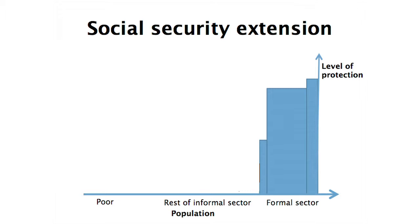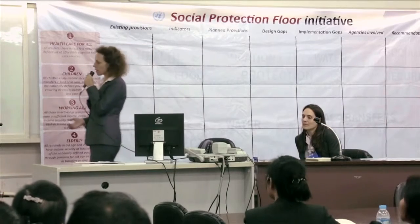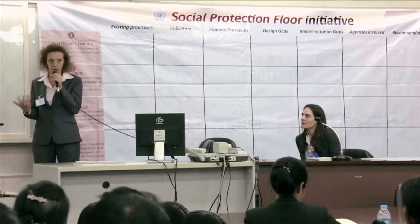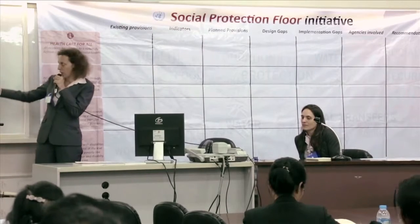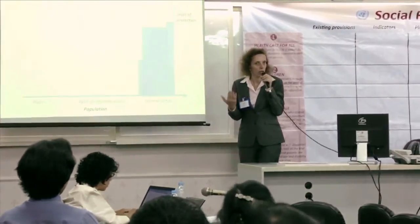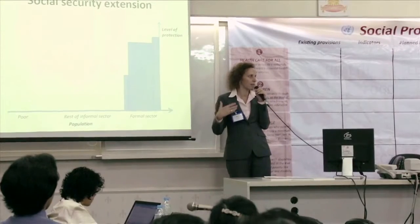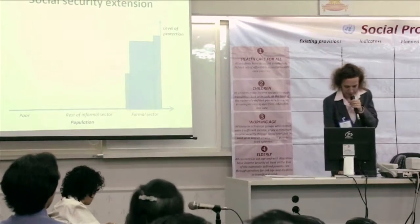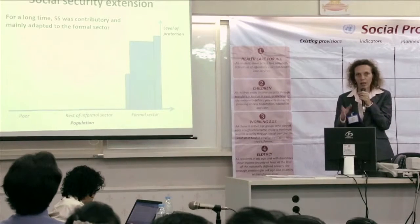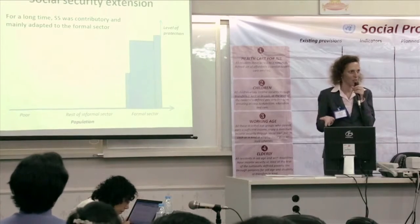The informal population, including informal economy workers and the poorest segments, usually have very little protection. The idea of extending social security is to expand coverage to those who are not covered — this is the horizontal extension. It also means reinforcing existing schemes to provide higher levels of benefits — the vertical extension. So there are two dimensions: horizontal, covering more people, and vertical, providing higher levels of benefits.